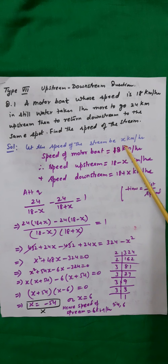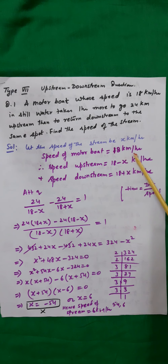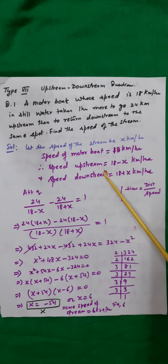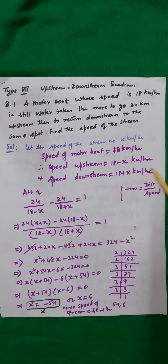Let the speed of the stream be x km per hour. Then speed of the motorboat will be 18 km per hour. Therefore, speed upstream will be 18 minus x km per hour, and the speed downstream will be equal to 18 plus x km per hour.